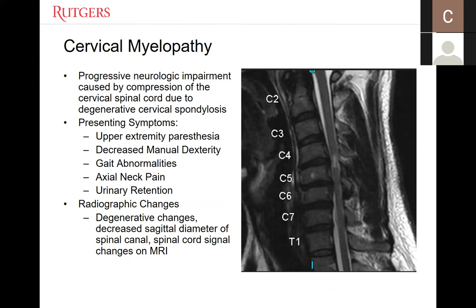Cervical spondylosis, like joint arthritis, becomes a problem when patients become symptomatic. Cervical myelopathy — which was thoroughly discussed by Dr. Stelmach in a recent Grand Rounds — is caused by compression of the cervical spinal cord due to degenerative changes. Common presenting symptoms include upper extremity paresthesias, usually in a non-dermatomal pattern, decreased manual dexterity, and gait or balance abnormalities. About 15% of patients with severe myelopathy do not report any neck pain, making diagnosis more difficult. In severe cases, urinary retention can be a later manifestation. Radiographic changes on MRI include decreased sagittal diameter of the spinal canal with associated cord compression.